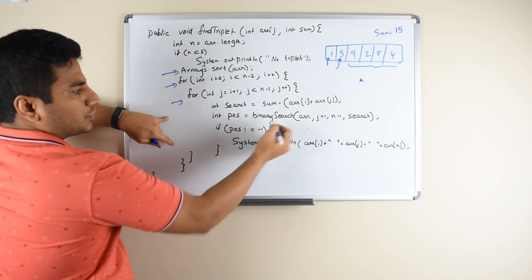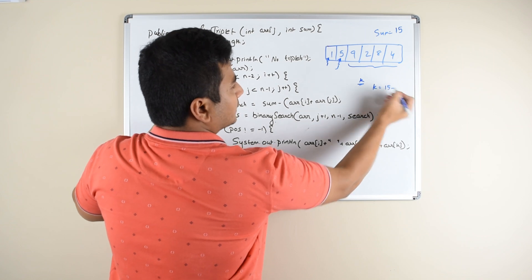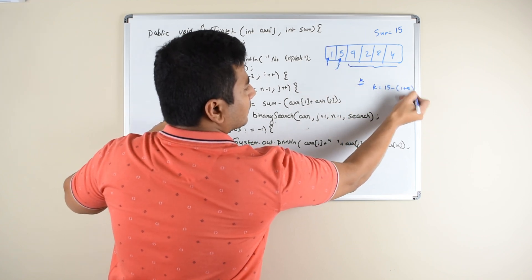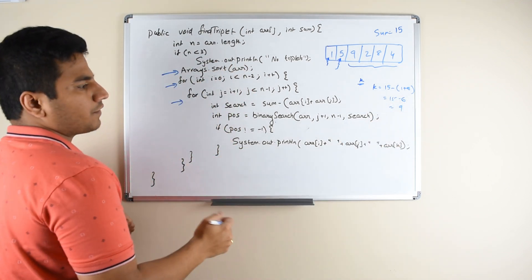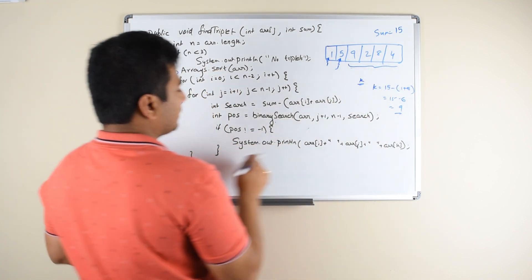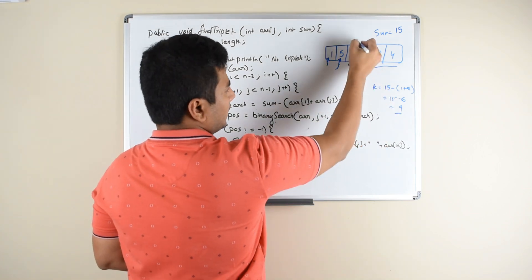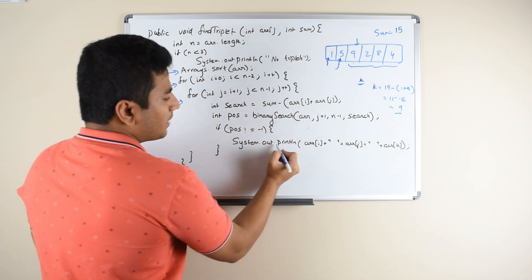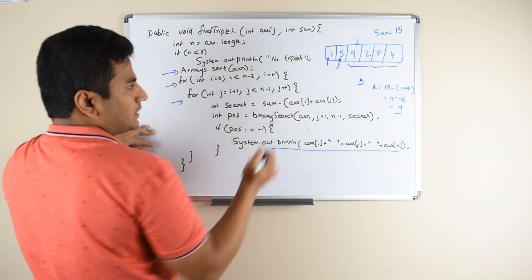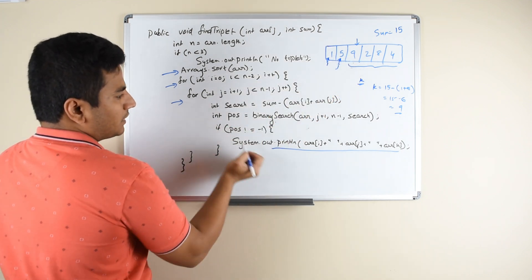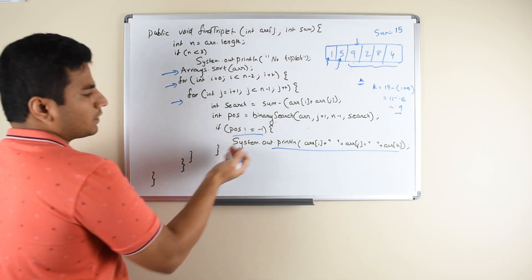Next what you are trying to do is you are trying to find the third element K in the rest of the array by calling binary search. How do you know K? So K is equal to 15 minus, here 1 plus 5, so 15 minus 6, that is equal to 9. So you are trying to find element 9 in the rest of the array. Once you find an element 9, we know that there is a 9 here. So once you find that element we are printing that triplet 1, 5, 9. And if you don't find an element 9 in this one, you will be returned with negative 1 from this binary search, and if it is not equal to negative 1, then only you are printing it. Otherwise you won't print any triplet.